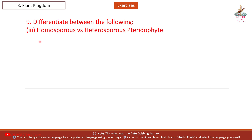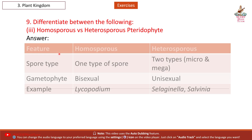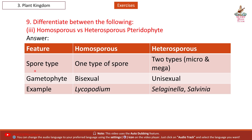Third: Homosporous versus Heterosporous pteridophytes. Feature — Spore type: Homosporous — one type of spore; Heterosporous — two types, micro and mega. Gametophyte: Homosporous — bisexual; Heterosporous — unisexual. Example: Homosporous — Lycopodium; Heterosporous — Selaginella, Salvinia.